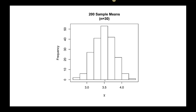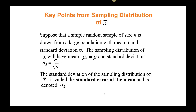Finally, we take samples of 30 rolls of a die, done 200 times. This distribution looks extremely normal — more approximately normal than the rest of them. And again, it is centered around 3.5, which is the same as the population mean. So, what does this tell us? Let's take the key points of a sampling distribution of X-bar.